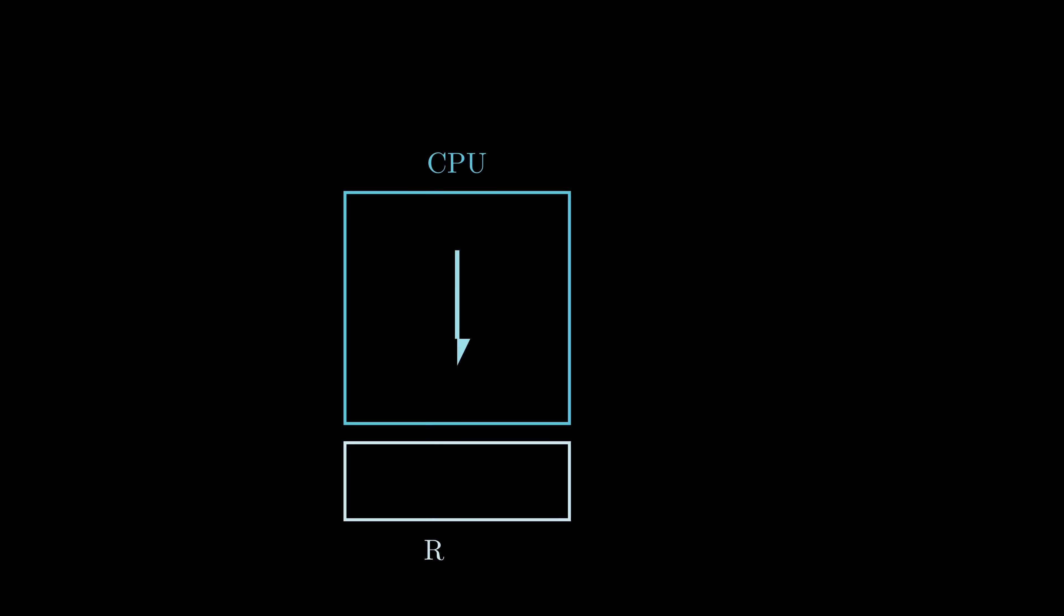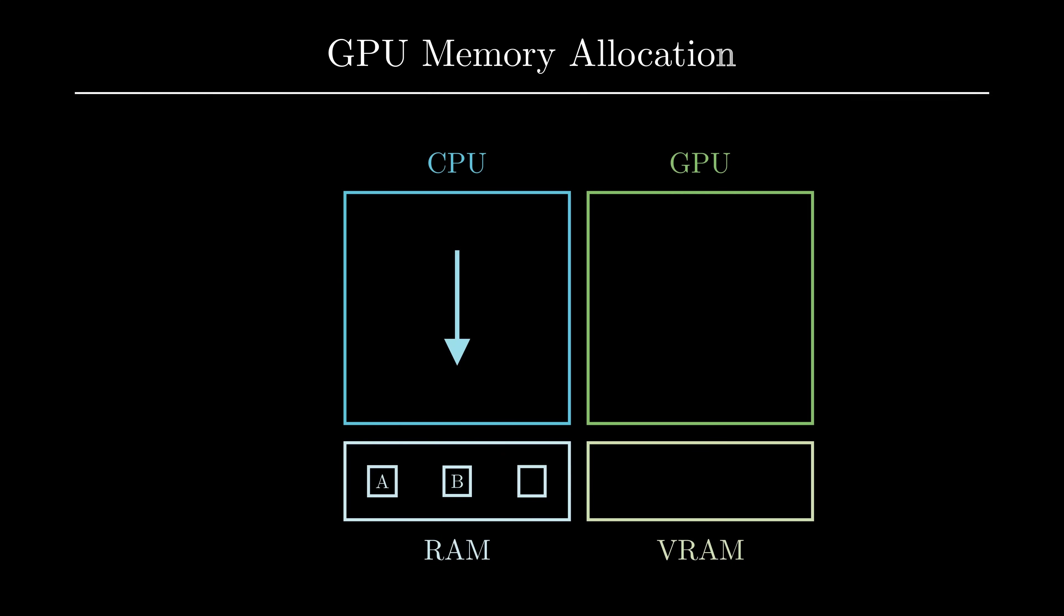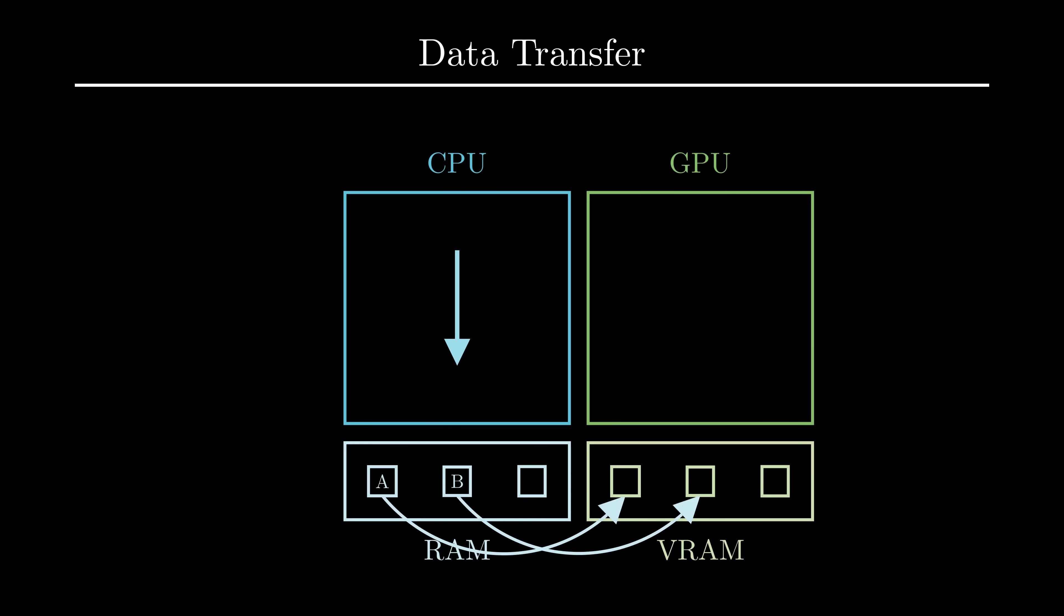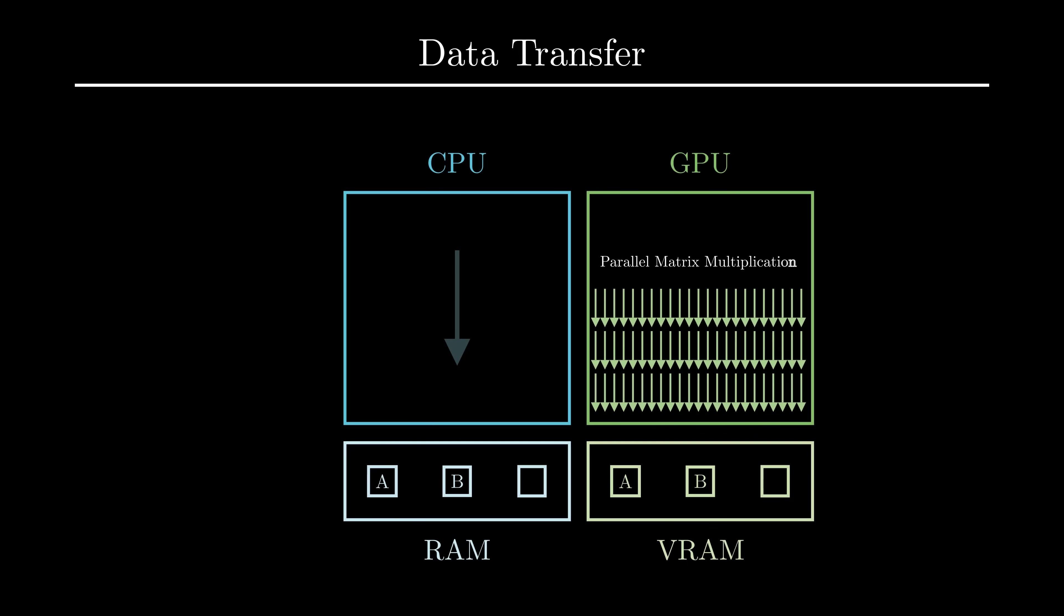GPU programming does not mean throwing out the good old CPU. CPU holds the data, the matrices, and allocates the memory on GPU VRAM. It then moves the data to the GPU. This is where GPU threads come into action and perform compute-intensive calculations. CPU again copies the result back from GPU VRAM to CPU RAM.